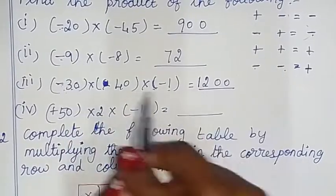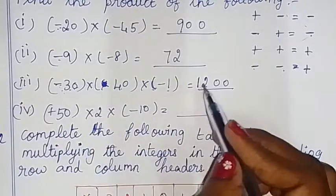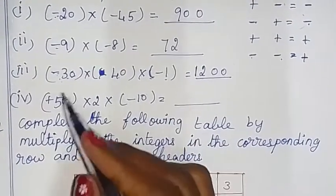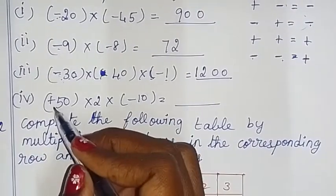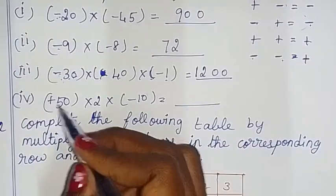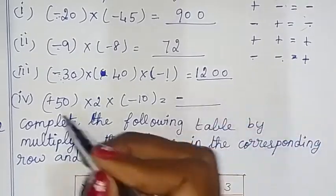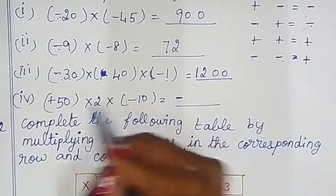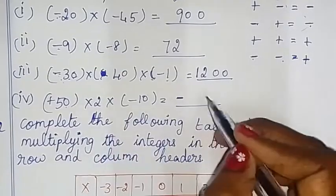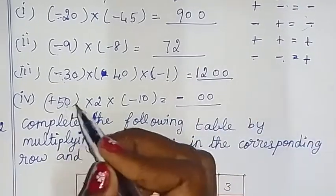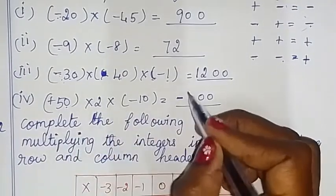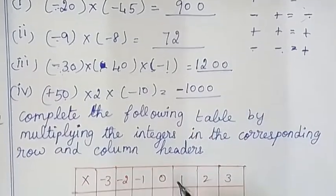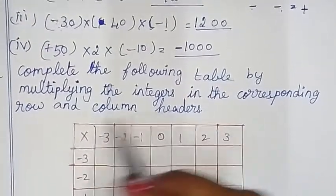2 minus is plus. So, this is the answer. Add the sum. So, if you look at the symbol, there is a minus. So, the answer will be minus. Now, if we multiply the numbers, the numbers are 0. The numbers are 10. So, this is the answer. Add the sum.